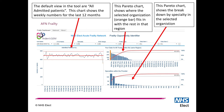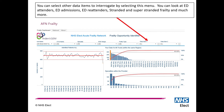There are three main charts in the tool. The first chart on the top left is an SPC chart on a weekly basis — the default view shows admitted patients. The top Pareto chart shows where your organisation fits within your region, and the bottom Pareto chart shows your organisation broken down by specialty.